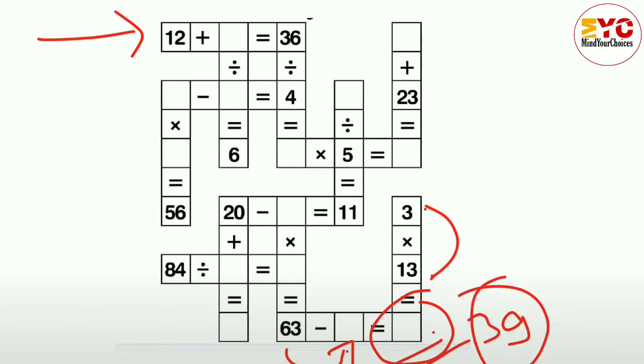So 12 plus which number is equal to 36? Definitely 24. So we can write here 12 plus 24 is equal to 36. After that 24 divided by which number is equal to 6? It will be 4.